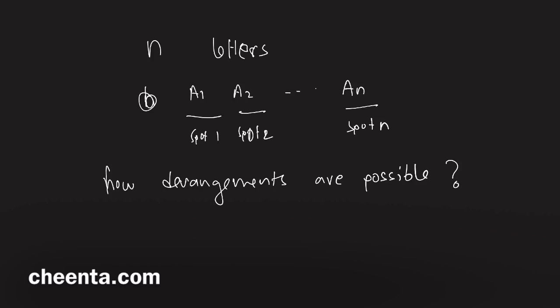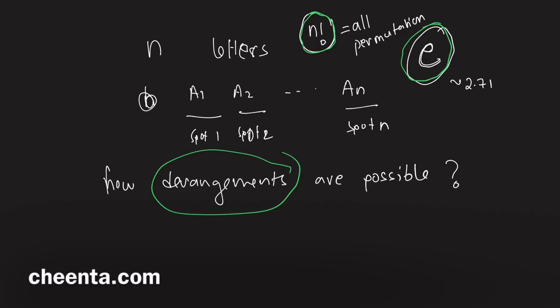There is a very interesting asymptotic formula which relates e, the magical number (which is approximately 2.71), with n factorial, the number of all permutations or all rearrangements. Somehow this n factorial, this e, and this notion of derangement are all related.